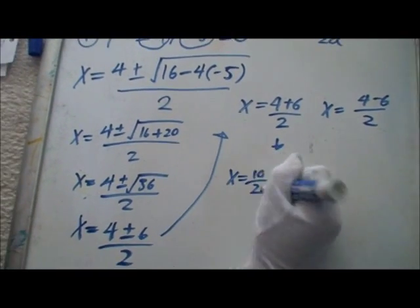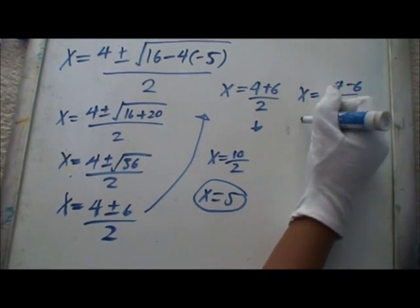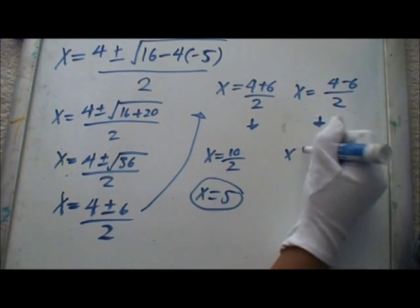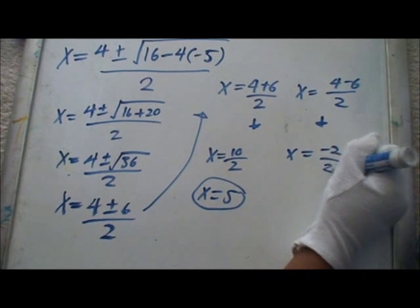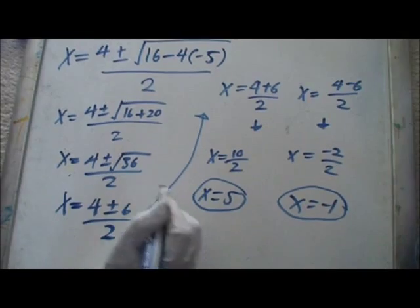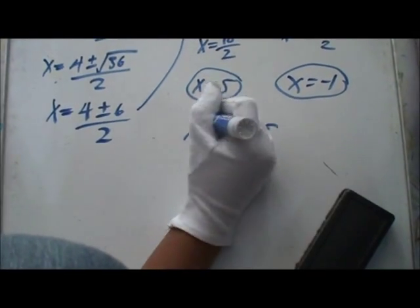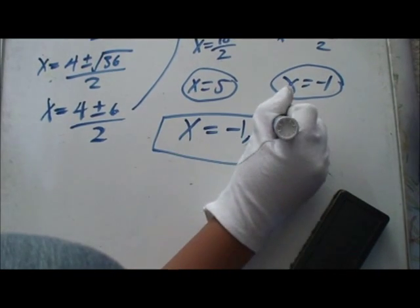In the first equation, x equals 10, over 2. So, x equals 5. In the second equation, x equals negative 2, over 2. So, x equals negative 1. There are two solutions to this problem. And that is your final answer.